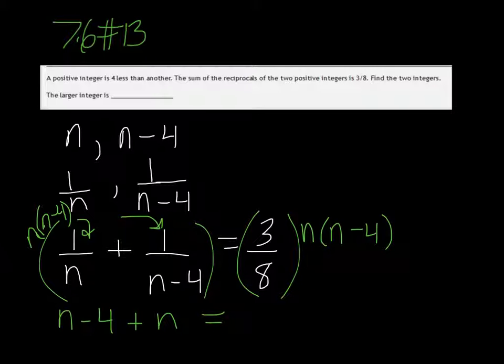And then the 3, oh, we need an 8 too, because there's an 8 in our denominator. So we're going to get 8 times n minus 4 and 8n. All right, so the 8s here divide out, and we're left with 3n times n minus 4.